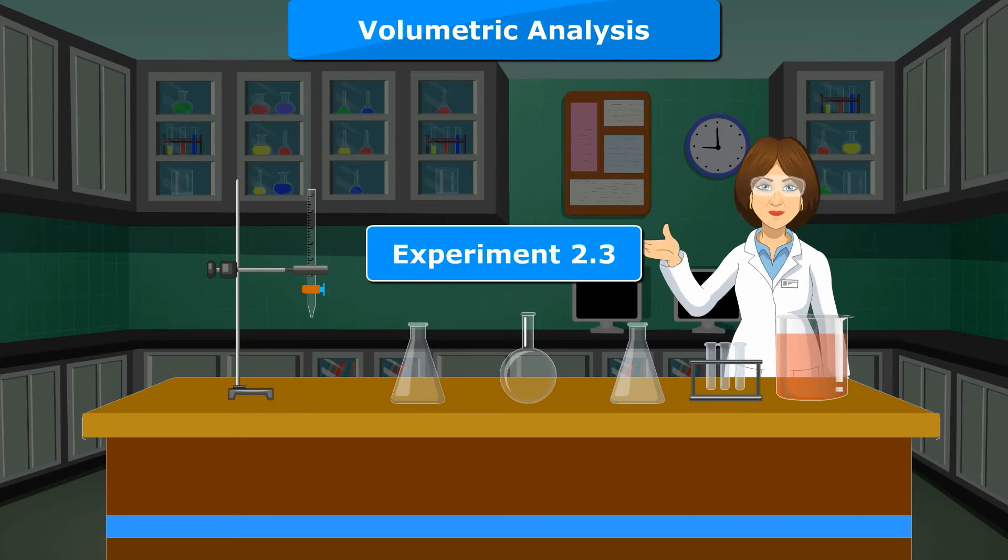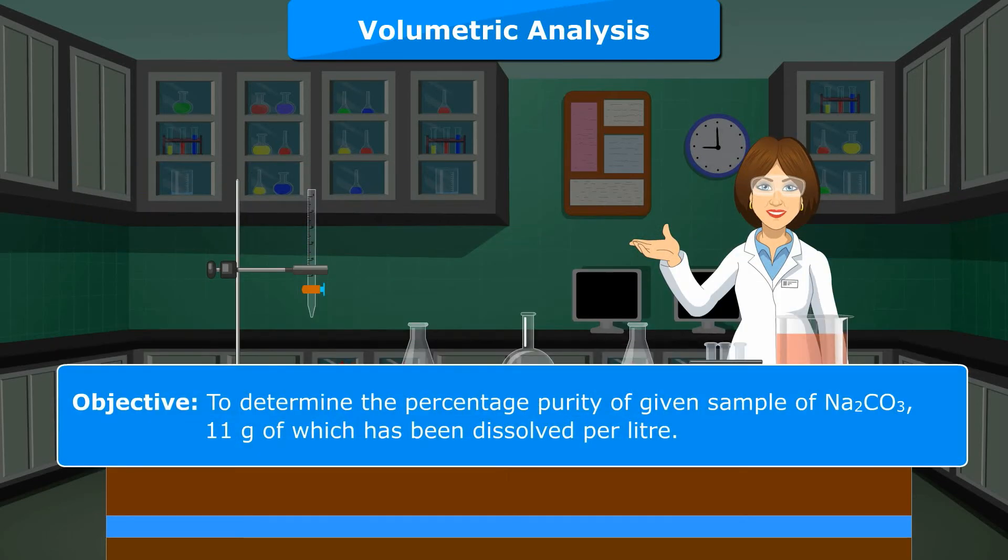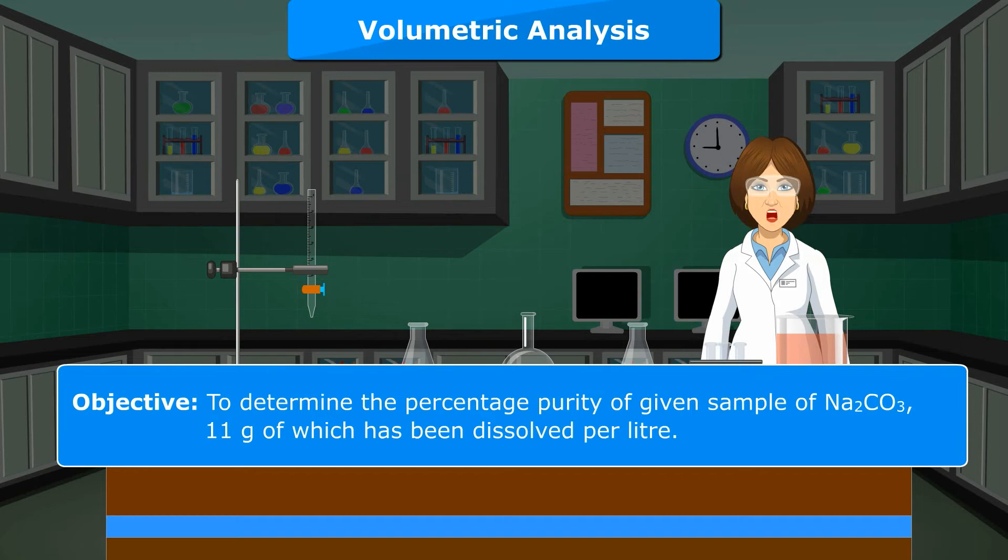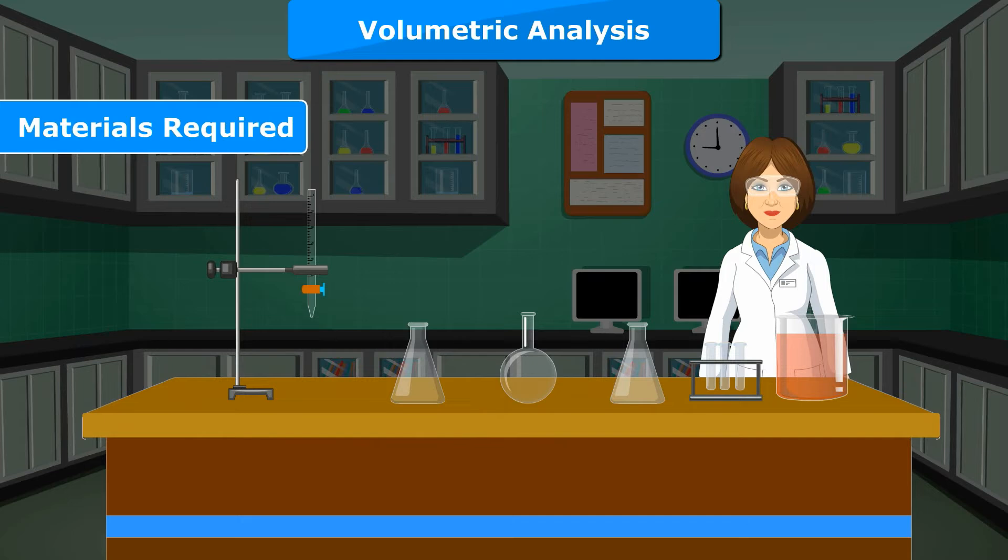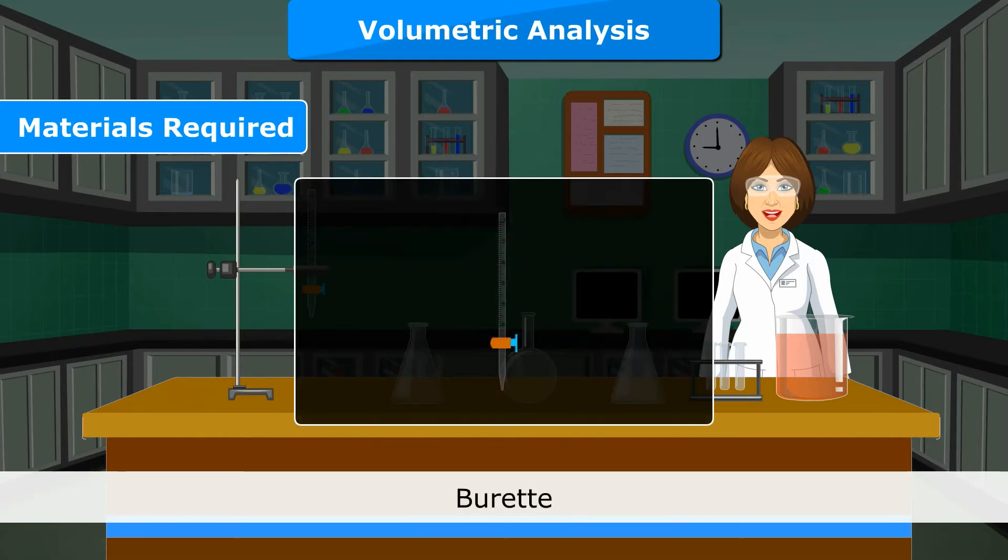Experiment 2.3 Objective: To determine the percentage purity of given sample of Na2CO3, 11 grams of which has been dissolved per litre. Materials Required: Buret,